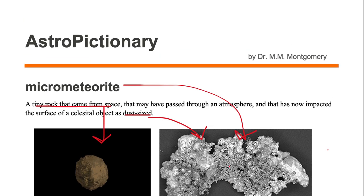Micrometeorites are tiny rocks that once were in space, that may or may not have passed through an atmosphere, but have now landed on the surface of a celestial object as dust-sized particles.